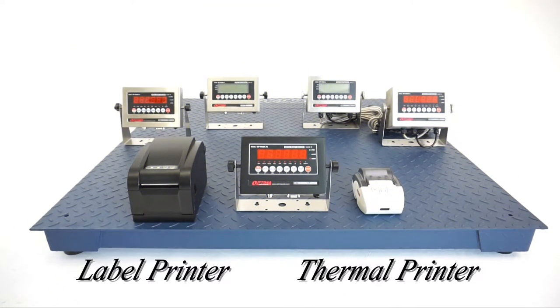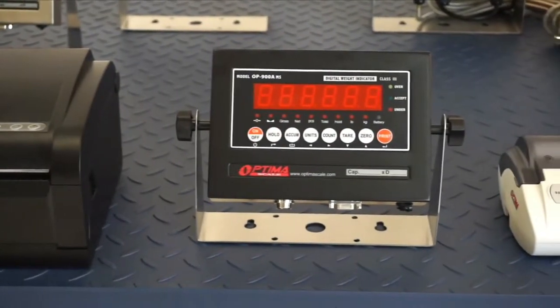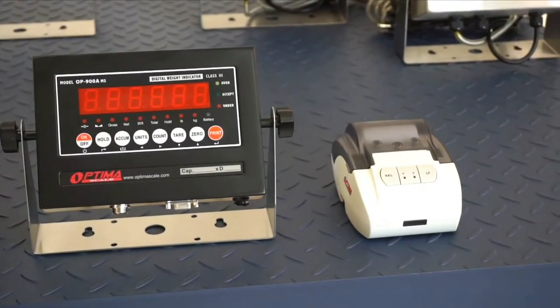We also offer label and thermal printing options to display date, weight, and time on your pallets, boxes, or crates. Such information is essential to document in logistics and trade applications.